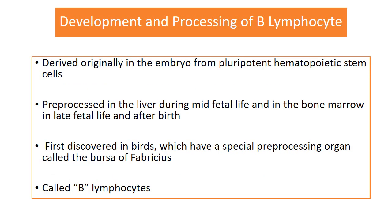Now, coming to the development and processing of B lymphocytes: they are derived in the embryo from pluripotent hematopoietic stem cells. They are pre-processed in the liver during mid-fetal life, and in late fetal life and after birth they are pre-processed in the bone marrow. They are known as B lymphocytes because they were first discovered in the bursa of Fabricius of birds.